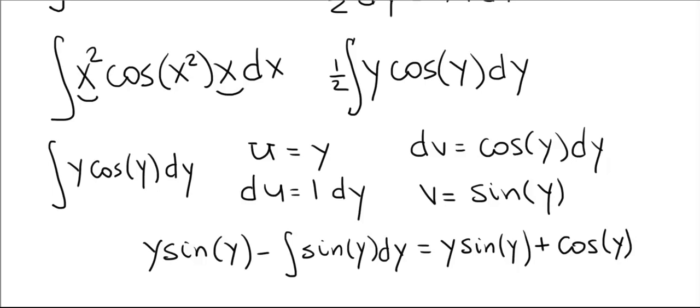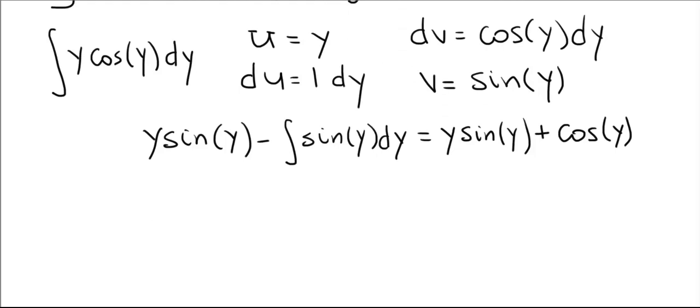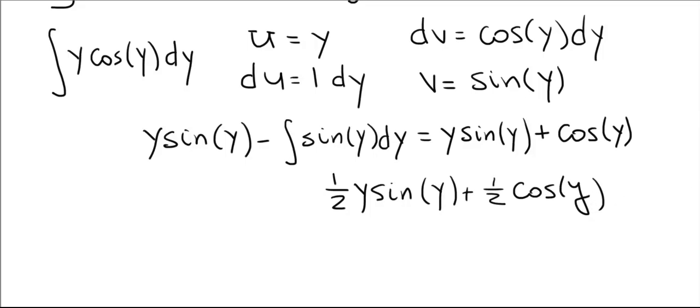And remember, we had a half in front, so our final answer in variable y is 1 half y sine of y, plus 1 half times cosine of y. And let's write the final answer to the problem.